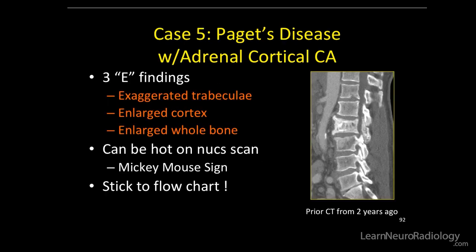It was Paget's disease, incidentally with adrenal cortical carcinoma. The three E findings of Paget's disease: exaggerated trabecular pattern, enlarged cortex, and enlarged whole bone. And don't forget, this can be hot on a nuke scan — the classic finding is the Mickey Mouse sign. Stick to the flow chart. This wasn't adrenal cortical carcinoma with metastasis as originally thought. Here's the CT from two years ago where the lesion was stable.